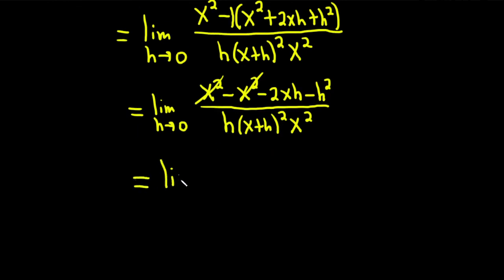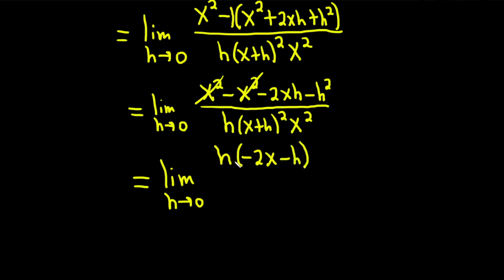Now we can factor out an h in the numerator so we can cancel the h on the bottom. This is the limit as h approaches 0. Pulling out h: h times negative 2x gives negative 2xh, and h times negative h gives negative h squared. So the numerator factors as h(−2x − h). The h cancels with the denominator h, leaving (−2x − h) over (x+h)² · x².